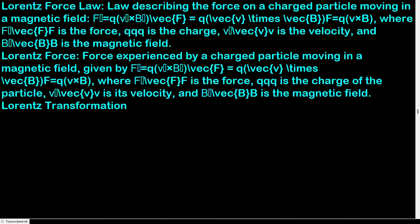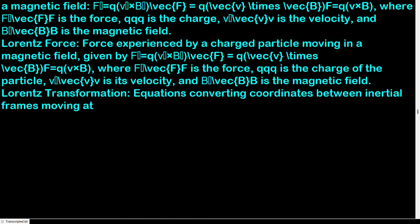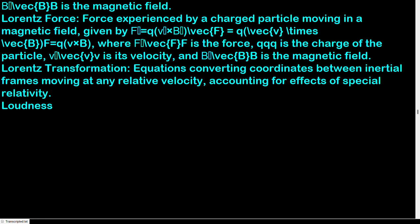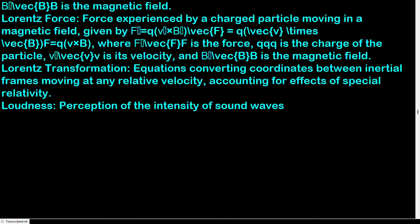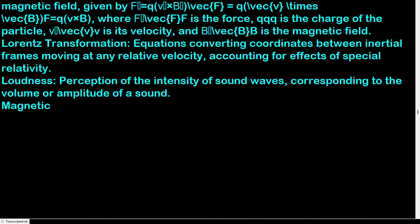Lorentz transformation: equations converting coordinates between inertial frames moving at any relative velocity, accounting for effects of special relativity. Loudness: perception of the intensity of sound waves, corresponding to the volume or amplitude of a sound. Magnetic field: region around a magnet or current-carrying conductor where magnetic forces act on other magnets or currents.